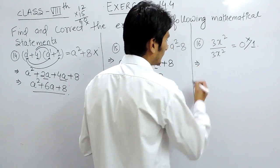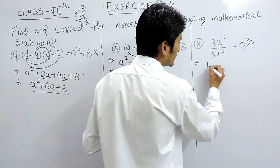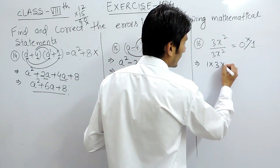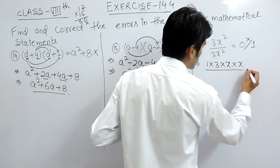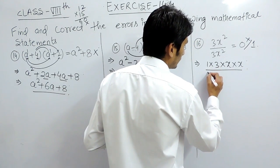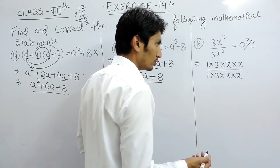Because if I write it in expanded form, or you can say if I expand it, 3 can be written as 1 multiplied by 3, and x square can be written as x multiplied by x. Similarly here also. So this is 1 multiplied by 3, and this is x multiplied by x.